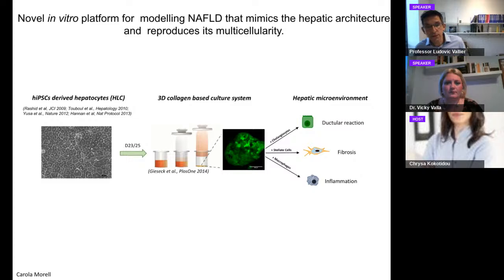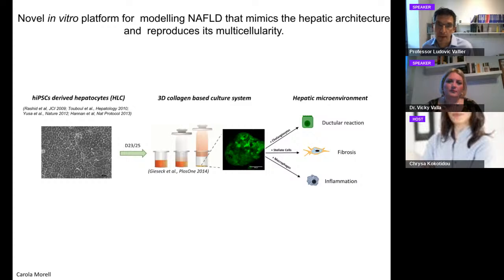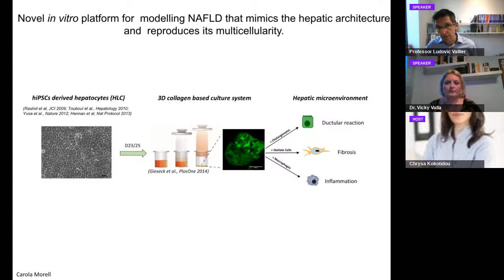To model the different stages of NAFLD — fat accumulation in hepatocytes, inflammation, fibrosis with extracellular matrix secretion, and ultimately cell death — we needed to introduce additional cell types: stellate cells involved in fibrosis, macrophages involved in inflammation, and cholangiocytes involved in the ductal reaction response. We developed a system where we derive hepatocytes and all these other cell types from iPSCs and combine them in a 3D collagen scaffold to study cell-cell interactions.